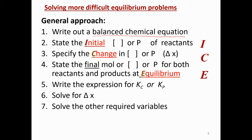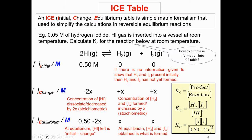First, balance the chemical equation, and then we are going to use the ICE table. Remember, we still need to write the expression for Kc or Kp. The ICE table stands for Initial, Change, Equilibrium. It is a simple matrix formalism used to simplify the calculation in reversible equilibrium reactions. Remember, the ICE table is for the reversible reaction.